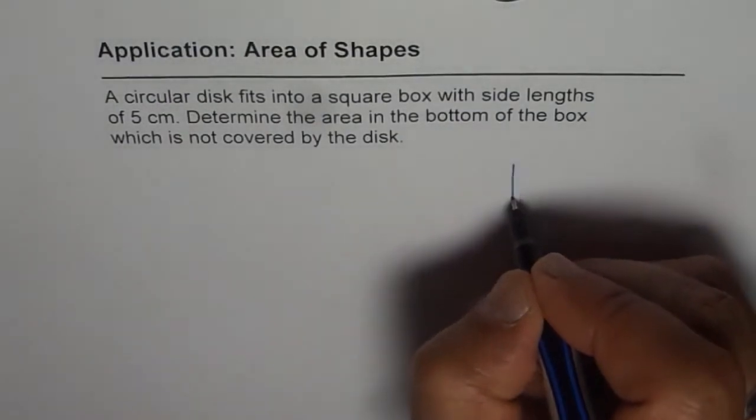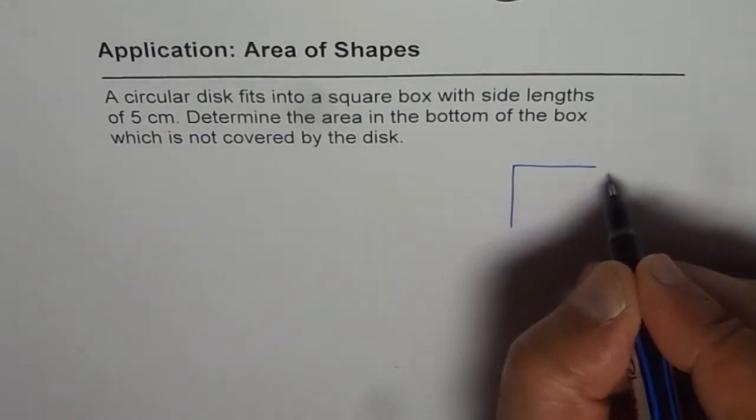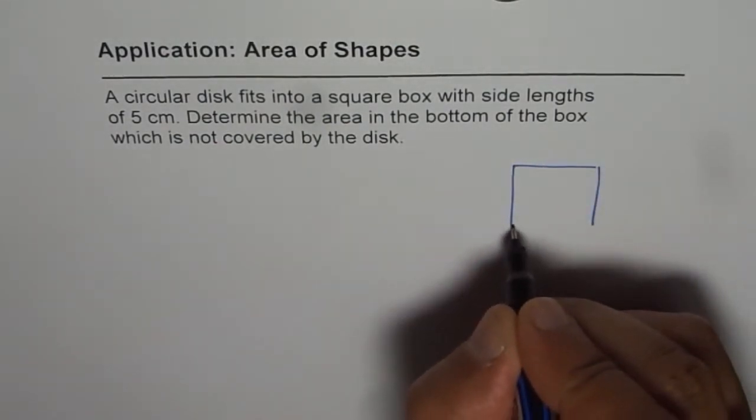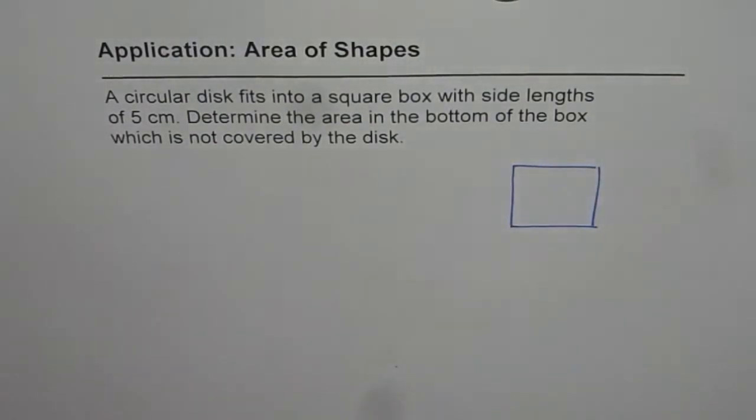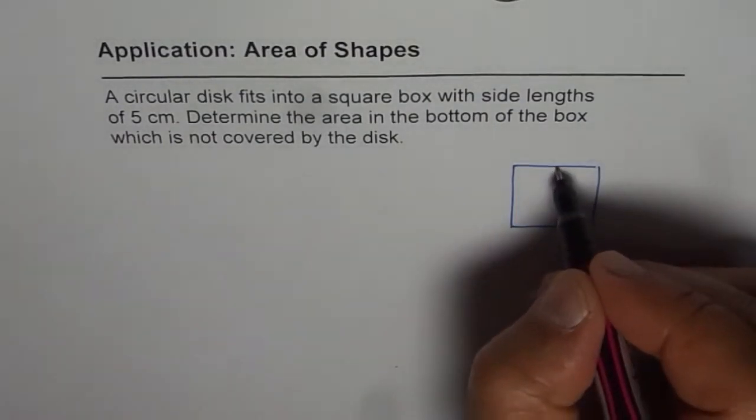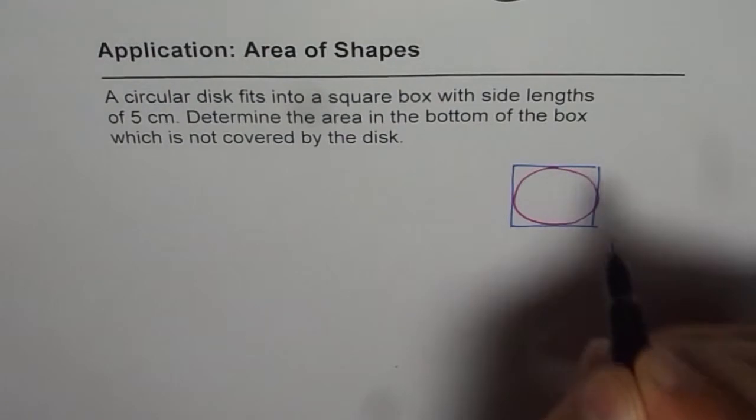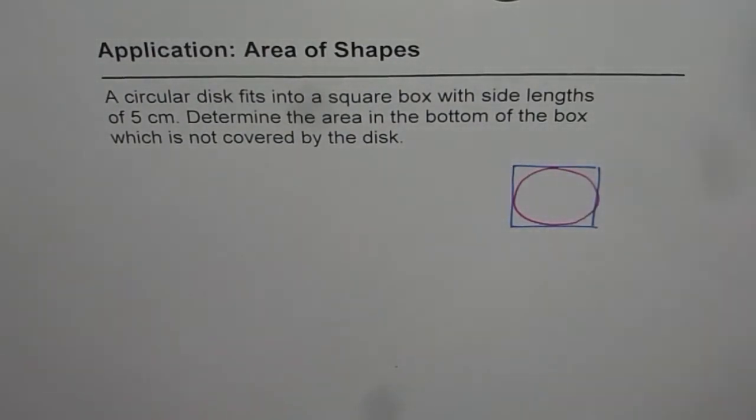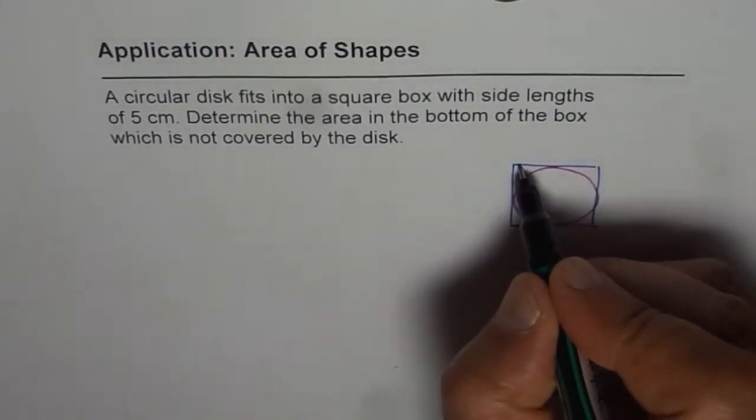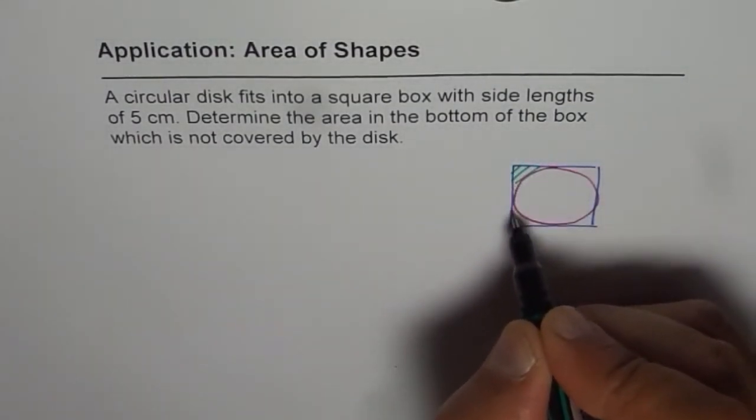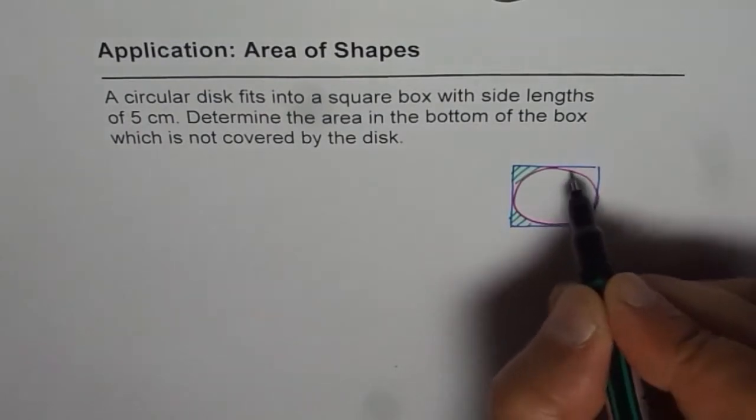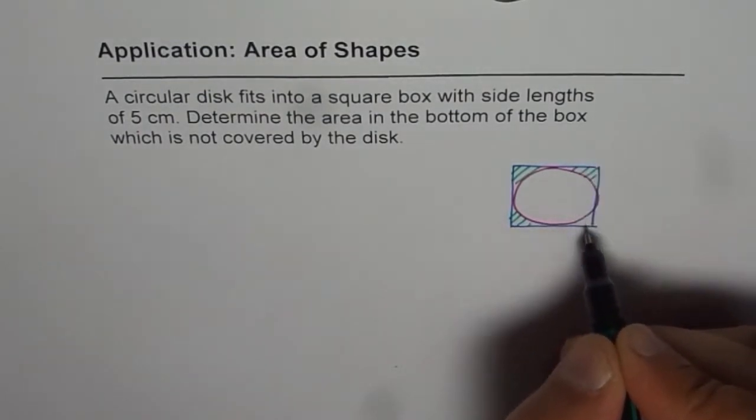This means if you have a square box, let me just sketch it. We have a circular disc here inside the square. It will cover most of the area, but some area is not covered. We need to find this area which is not covered - that is the question.